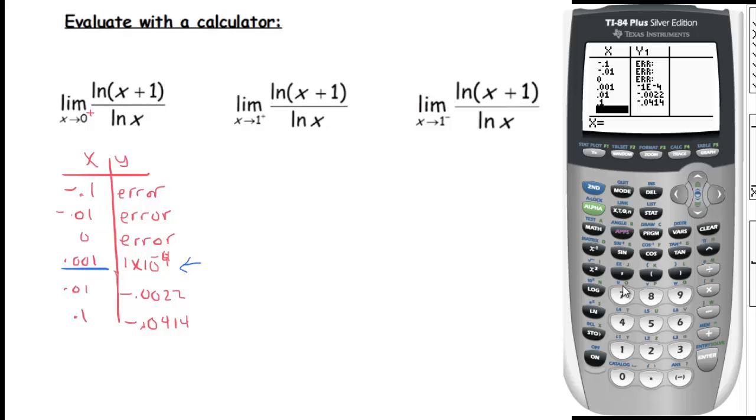We should probably focus on this. This is the x value closest to zero and we get a really really tiny number. If you wanted to get even more precise, you could try point zero zero zero one. You'll see it's one times ten to the negative five, which is even closer to zero. So I think we can be pretty confident that that's approaching zero.